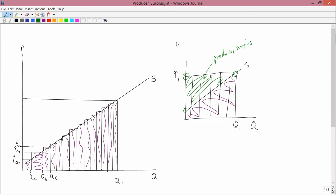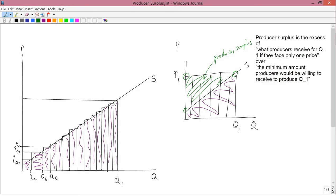Okay, so there is a concept of producer surplus. And it's the... Let me type it. So producer surplus is the excess of, on the one hand, what producers receive for Q1 if they face only one price, over the minimum amount producers would be willing to receive to produce Q1. So that's producer surplus.